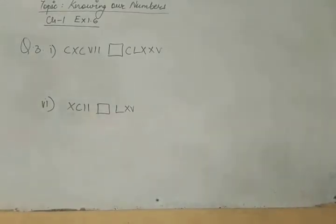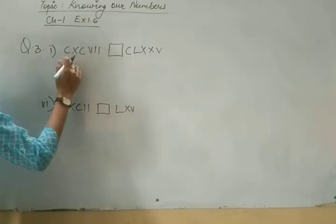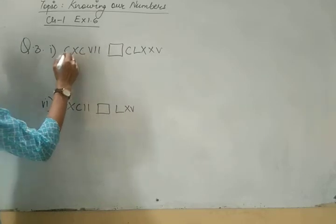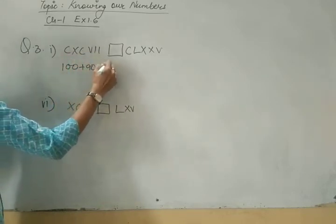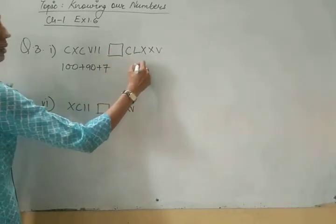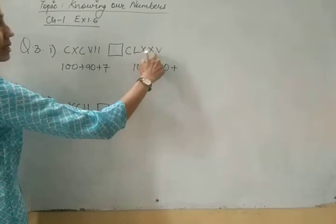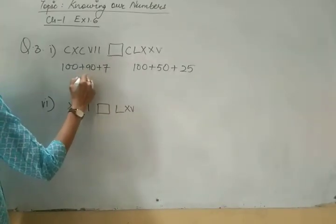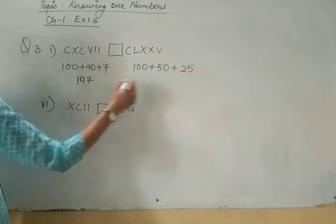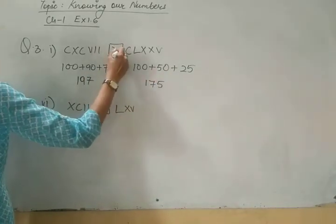Now in third question, you have to compare. Means you have to find out which number is greater. First change it into Hindu Arabic. C means 100. XC means 90 plus 7. 100 plus L means 50. And this will become 175. It means this is greater.